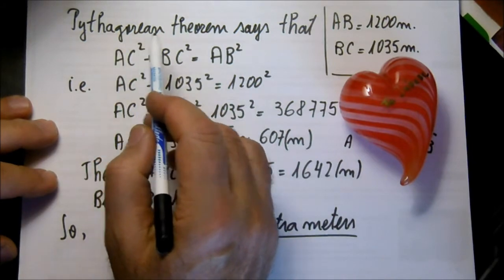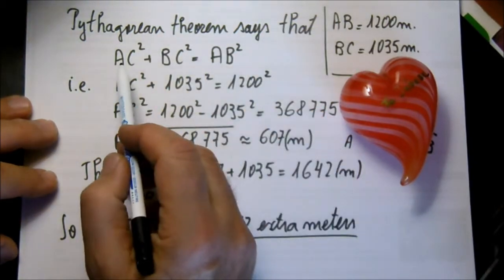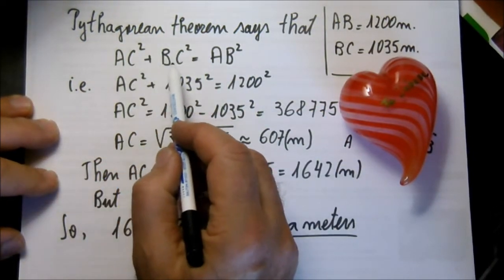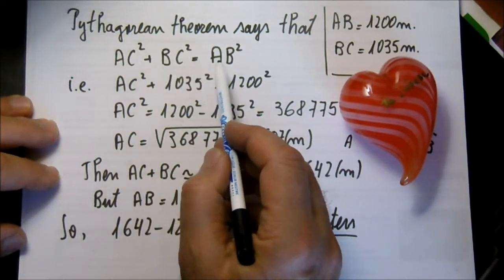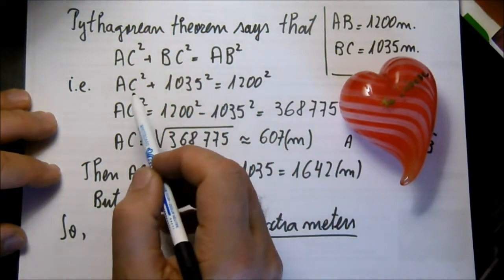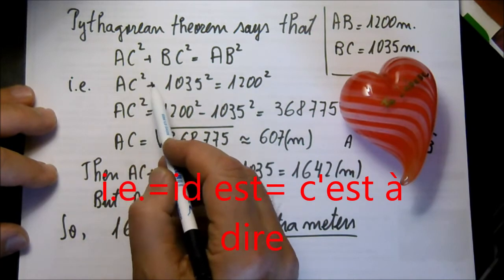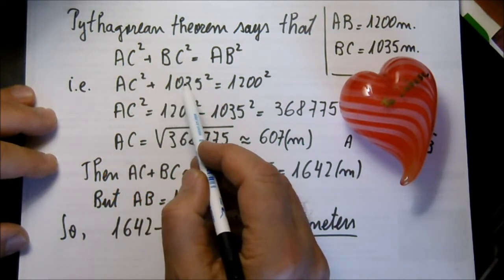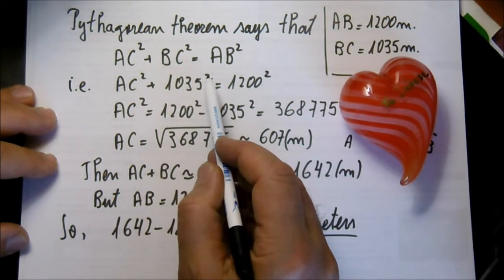The Pythagorean theorem says that AC squared plus BC squared equals AB squared, i.e., AC squared plus 1,035 squared